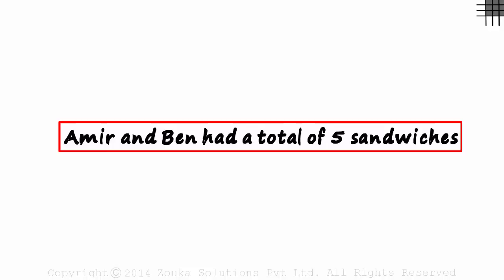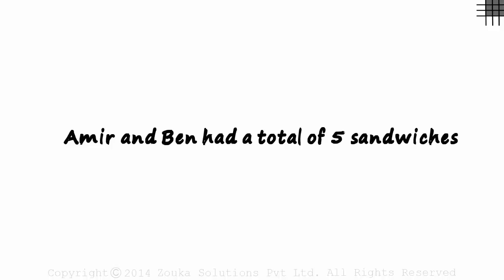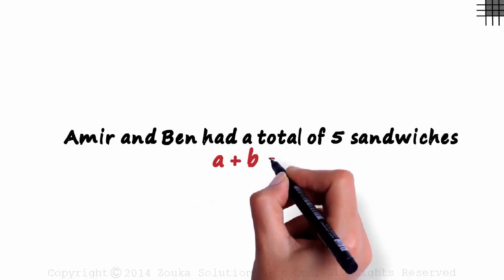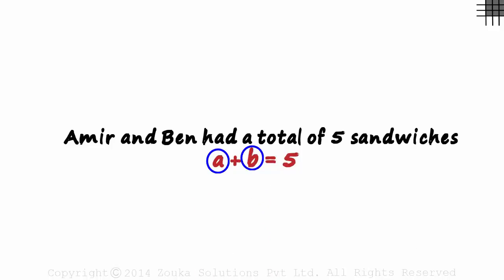Aamir and Ben had a total of five sandwiches. How do we write this using variables? We can write it as A plus B equals 5, where A and B are the number of sandwiches each of them had.